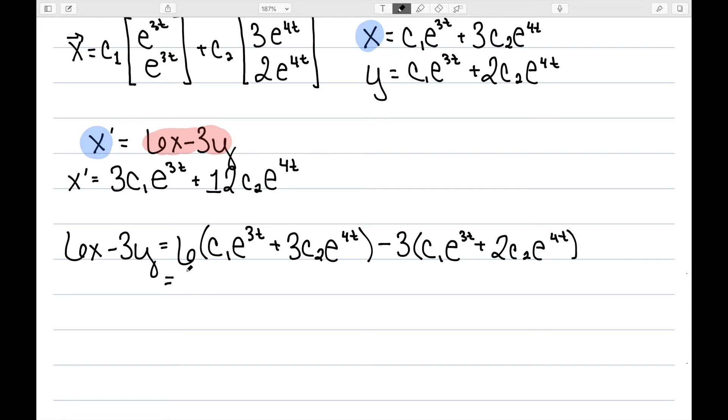Now we can work on simplifying. This is 6c1·e^(3t) + 18c2·e^(4t). Multiplying the second one out gives me -3c1·e^(3t) - 6c2·e^(4t). Combining like terms, 6 - 3 is 3c1·e^(3t). And 18 - 6 is 12, so 12c2·e^(4t). And we can see that this matches. These two match, which tells me that this was correct. This is the actual solution for x.